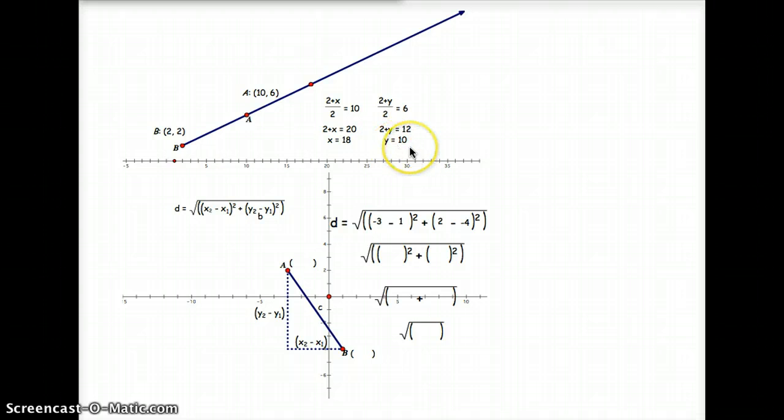Subtract 2 from both sides. 12 minus 2 is 10, so my y is 10. So this point right here, and we can call it just for namesake purposes point C, is at point 18 over and 10 up.